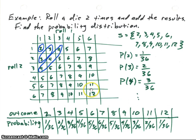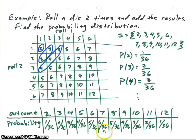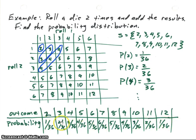Eventually the counts start going down again. For sevens, there are six combinations — the maximum. Then for eights, there are only five. And finally for twelve, there is only one. I wrote the probability distribution at the bottom: outcomes two through twelve across the top, and probabilities 1/36, 2/36, 3/36, and so on, peaking at 6/36 for seven, then going back down — five, four, three, two, one over 36. If you add up all of those probabilities, you get one, confirming the distribution is correct.